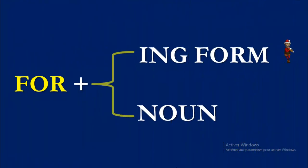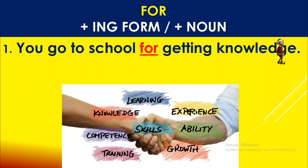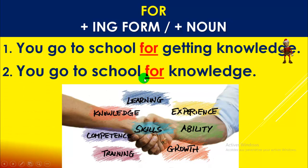'For' is followed by the ING form or a noun. Contrairement à 'to', 'in order to', 'so as to' qui sont suivis de l'infinitif sans 'to'. Example: you go to school for getting knowledge — ING form. Or: you go to school for knowledge — noun. Je vais à l'école pour obtenir le savoir, ou bien je vais à l'école pour le savoir. You can have ING form or a noun.